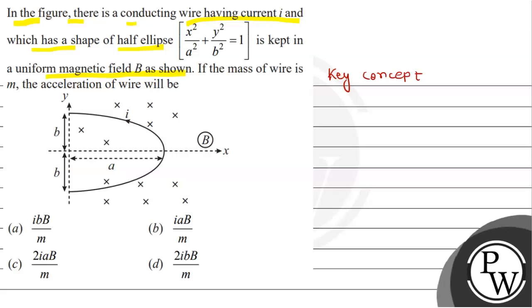The formula we will use for solving is F = I(dL × B). This is the formula with which we will calculate the force. And then if we get the force, we know that F = mass × acceleration, so acceleration = F/M.